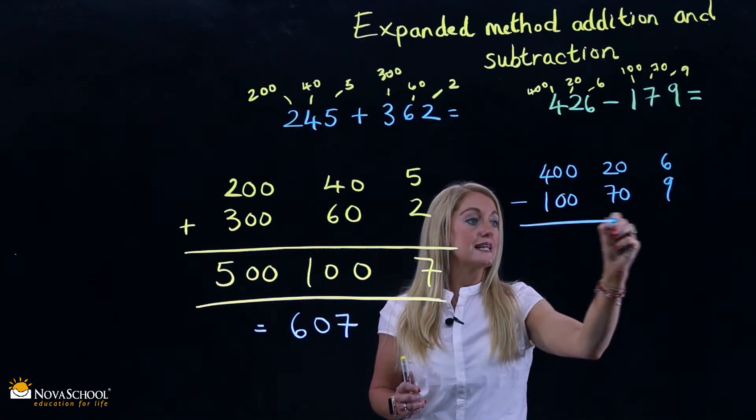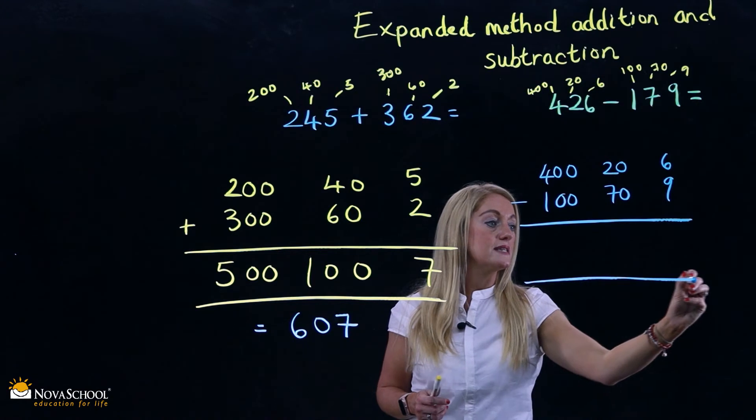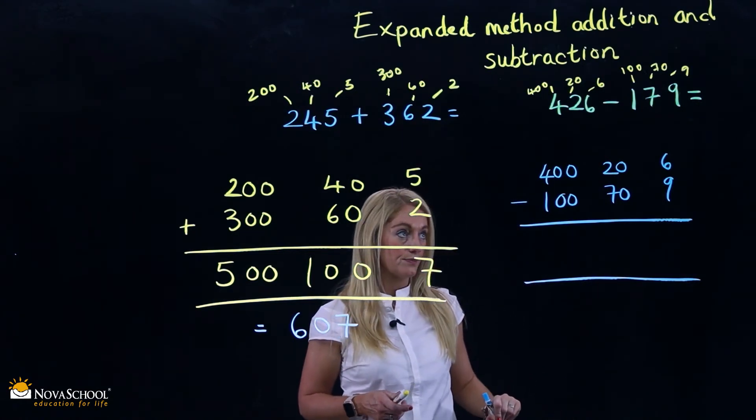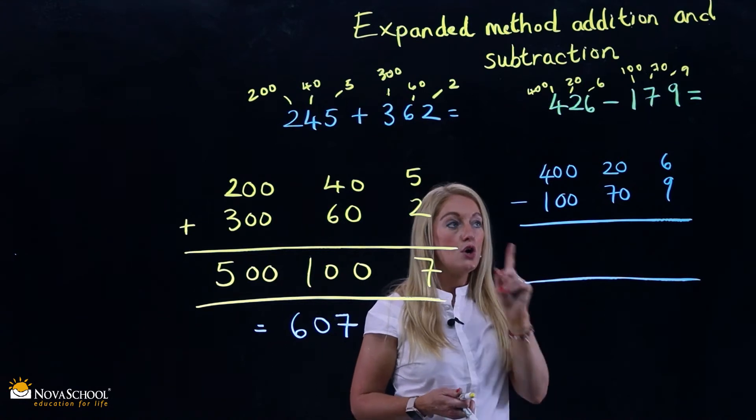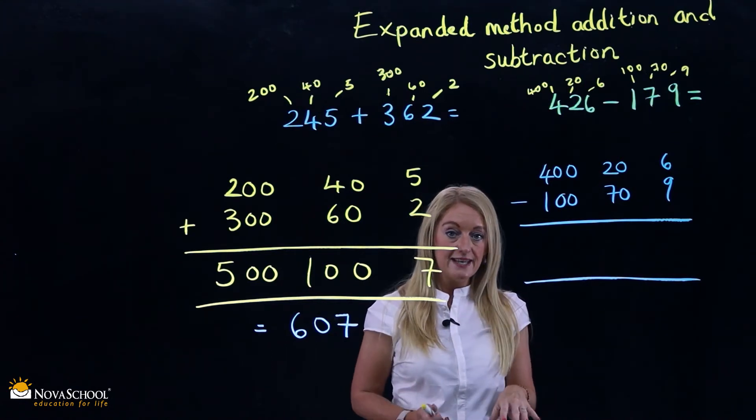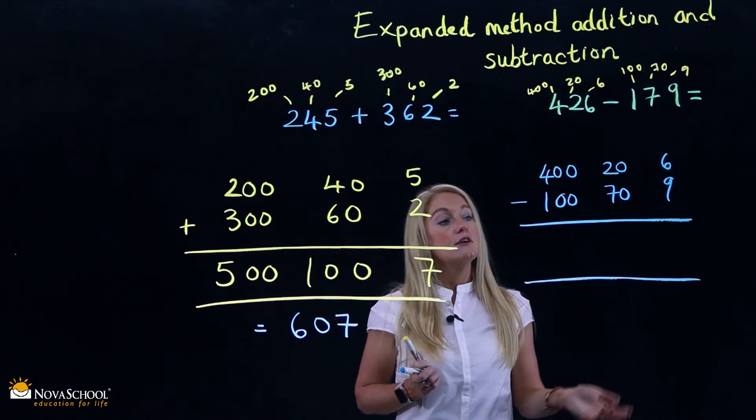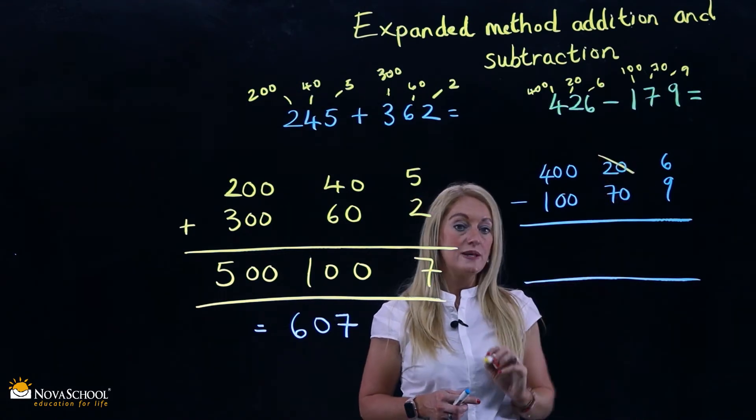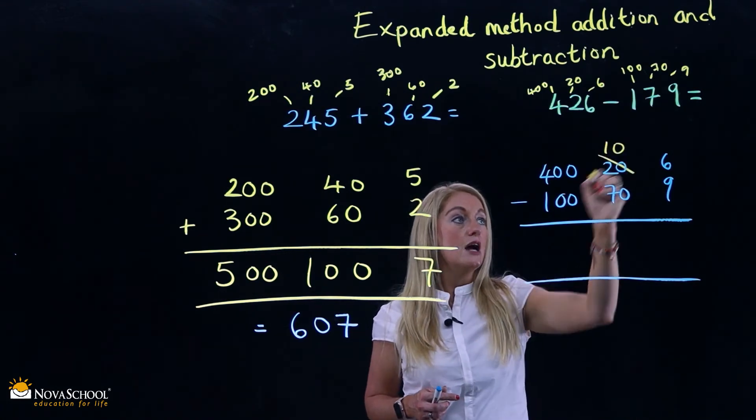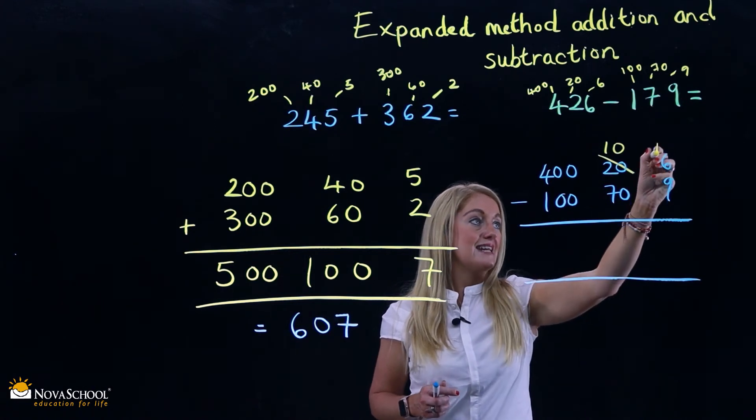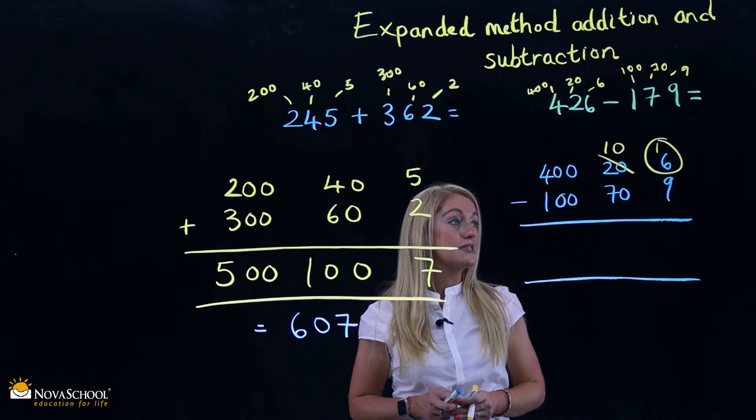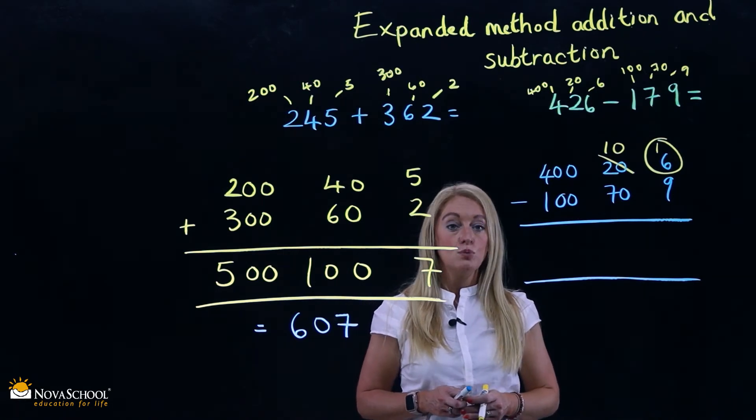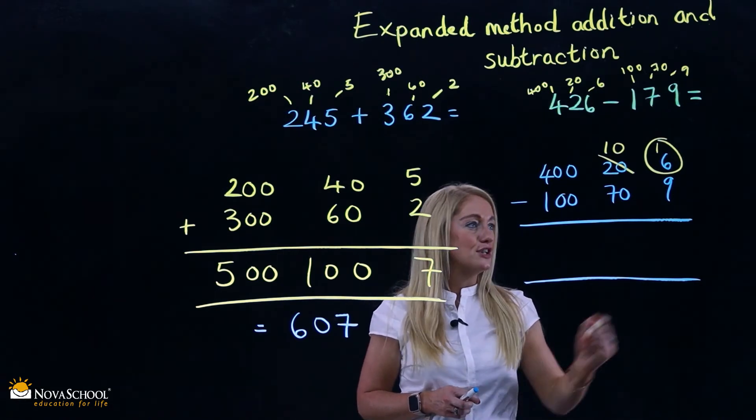Now this question's a little bit different. I wonder if you can see why? Okay, 6 subtract 9. Can we do it? No, we have to steal. Now let's steal from the tens column. We cross out our 20 and we make it 10. And we steal the 10 and add it to the 6 to make a new number. Now we do 16 subtract 9, which is 7, correct.